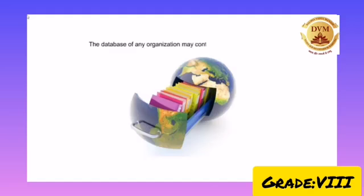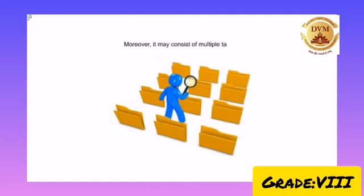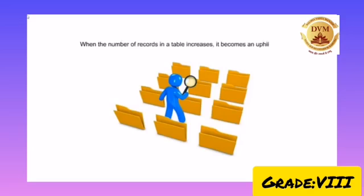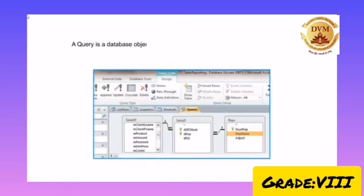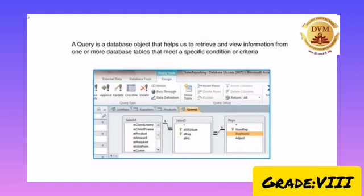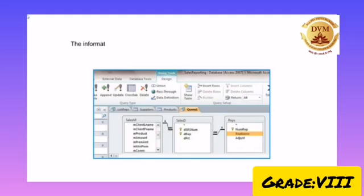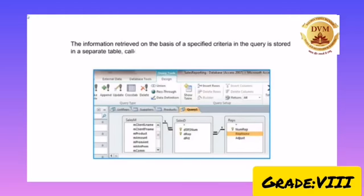The database of any organization may contain a huge amount of data. Moreover, it may consist of multiple tables. When the number of records in a table increases, it becomes an uphill task for any user to extract specific records from the table. Microsoft Access provides us the solution for this problem through queries. A query is a database object that helps us to retrieve and view information from one or more database tables that meet a specific condition or criteria which you define. The information retrieved on the basis of the specific criteria in the query is stored in a separate table called the query table.